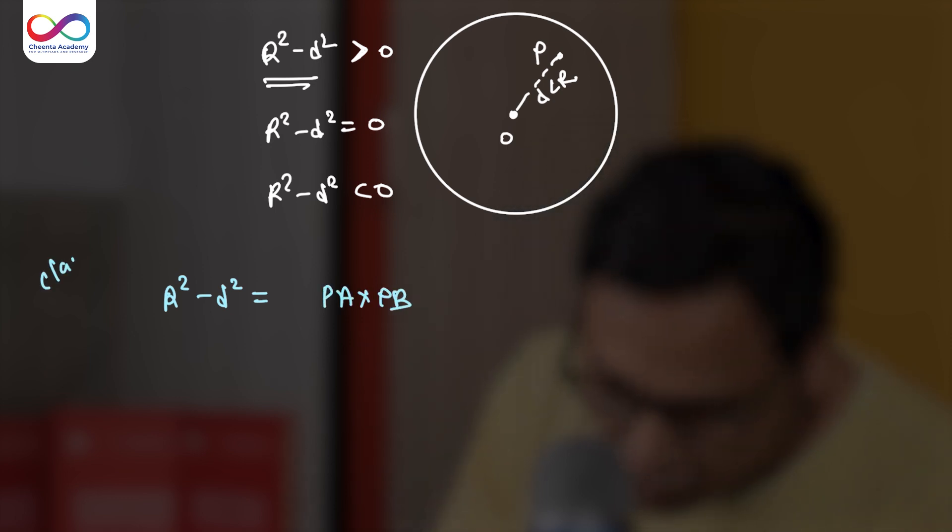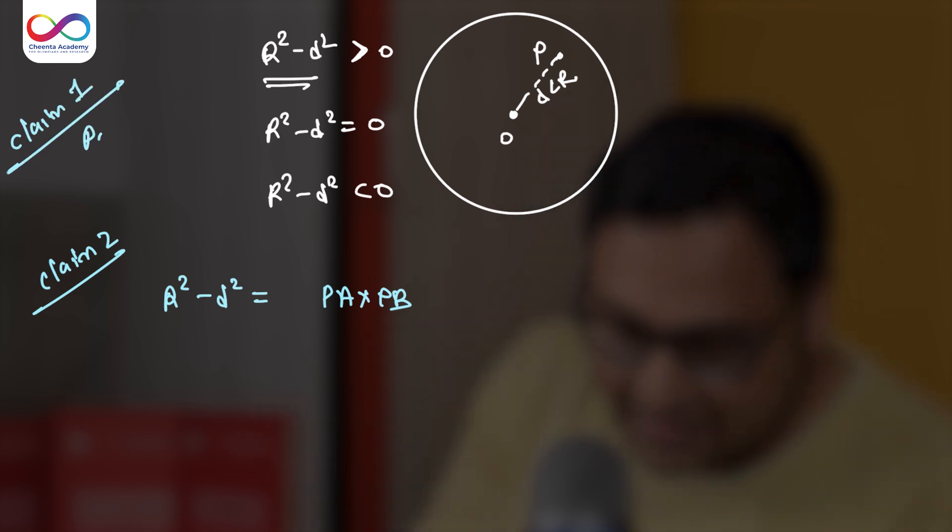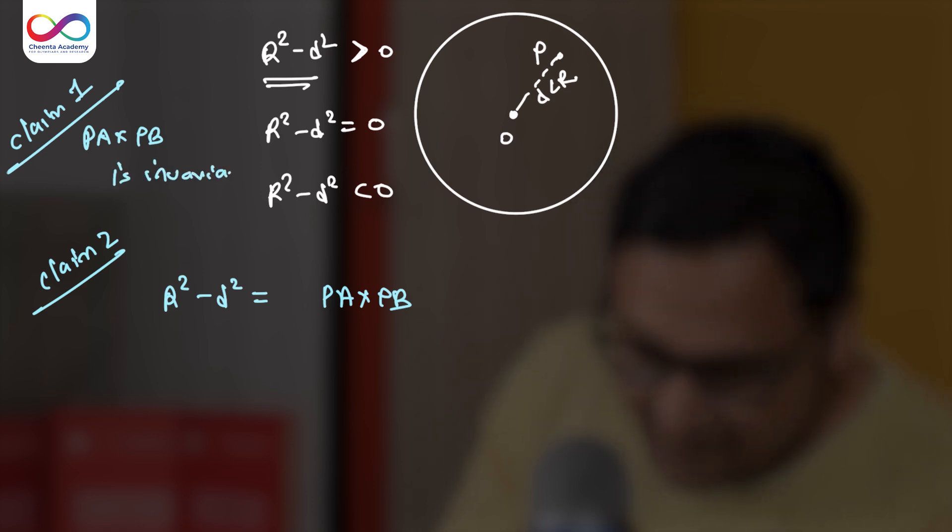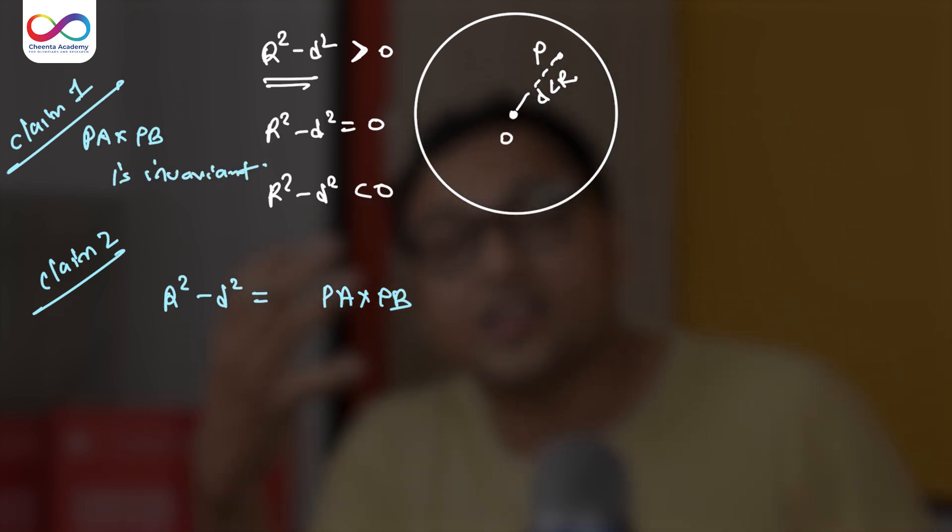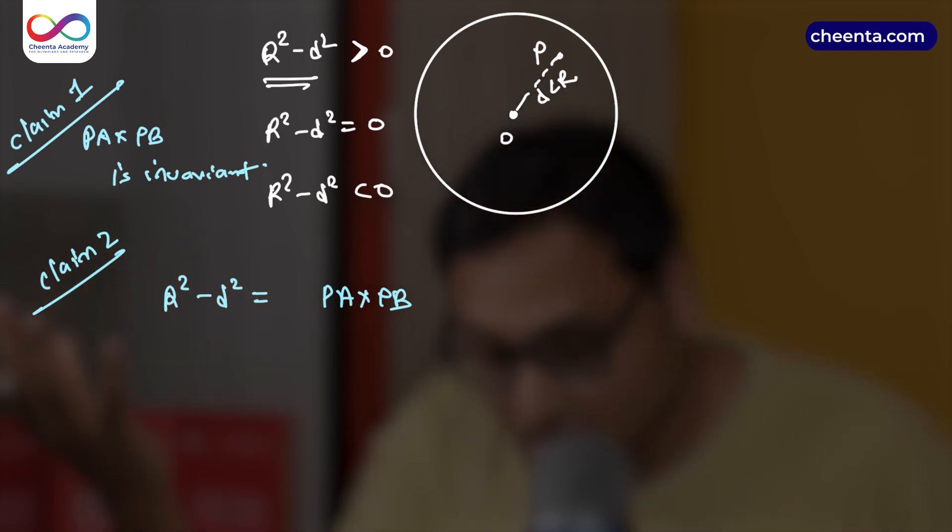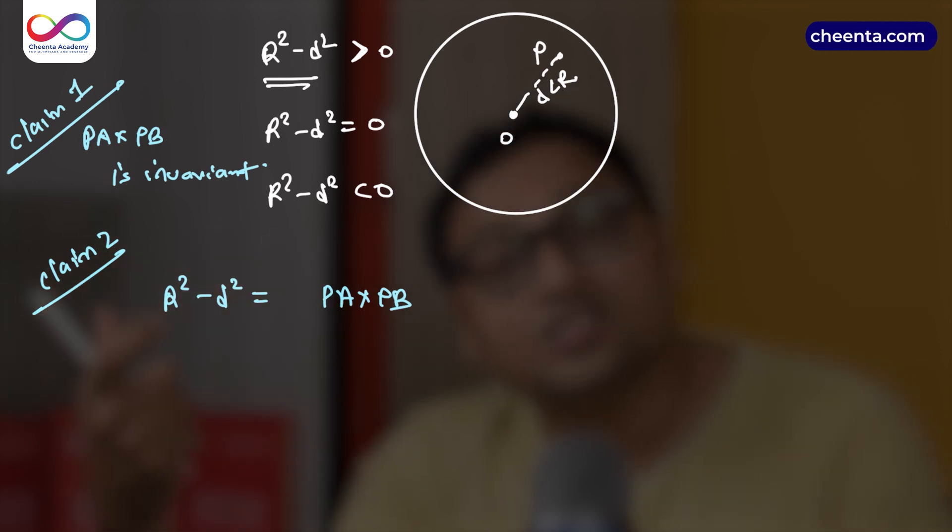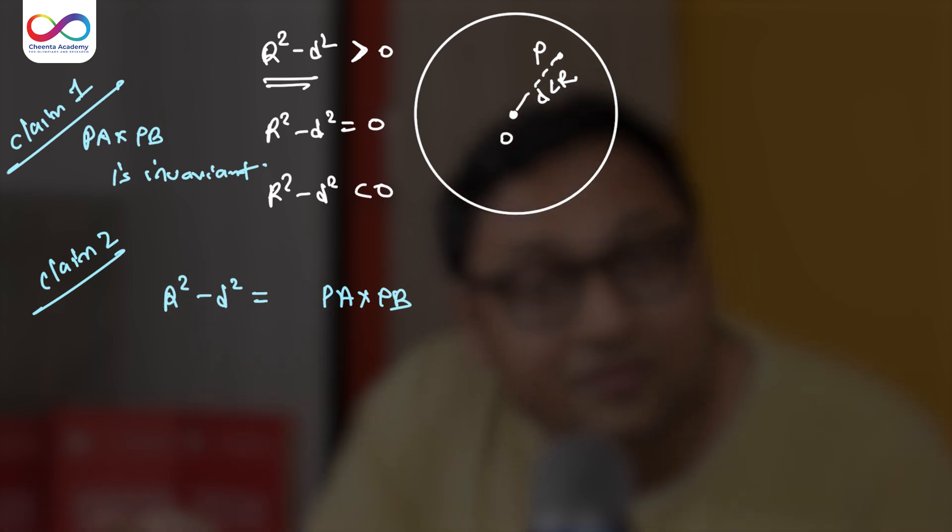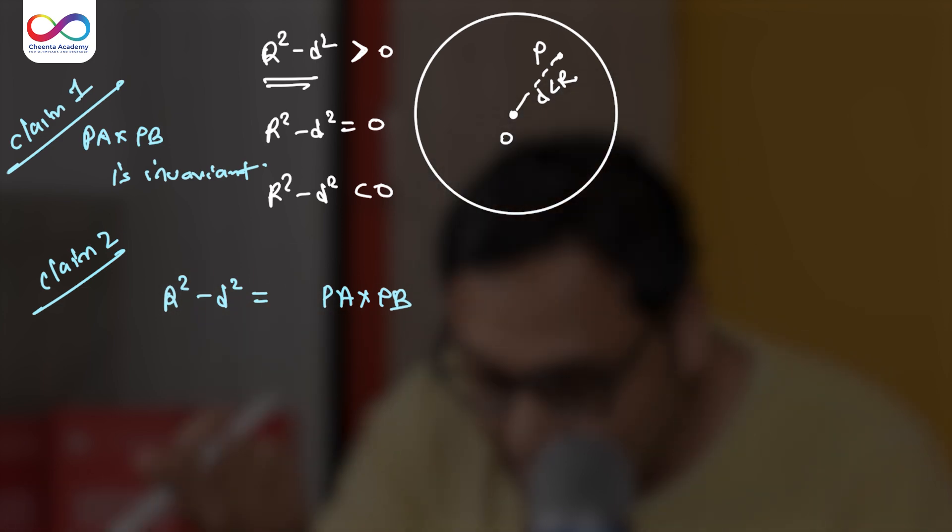Now my claim is this: that R² minus D² is equal to PA times PB. This is like claim 2. Remember claim 1 was that this is an invariant - PA times PB is an invariant. The claim 2 is R² minus D² equals PA times PB. It's equal to that invariant. Now I'll give you a clue how to go about the proof of this.